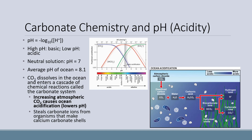Increasing atmospheric CO2 lowers pH because loading in CO2, which reacts with water molecules, eventually forms carbonate and protons. Those protons lower the pH, making it more acidic. The dominant form of carbonate shifts to bicarbonate because for every molecule of carbonate that's made, two protons are made — so one proton combines with carbonate and bicarbonate becomes the dominant chemical form.